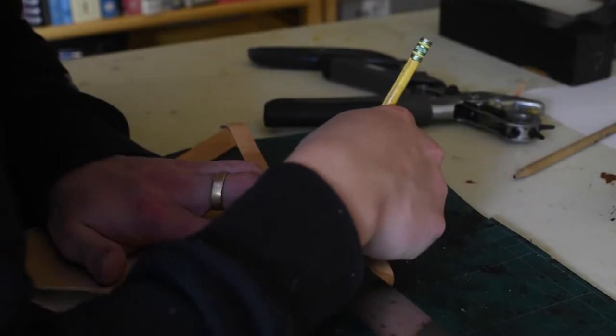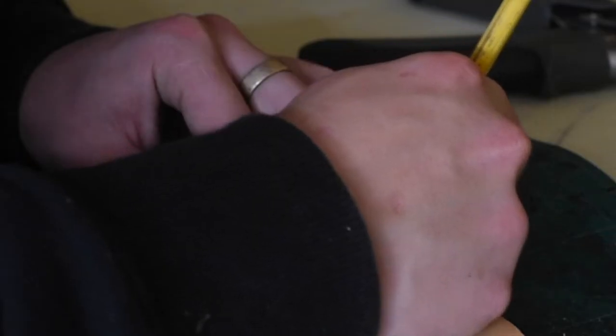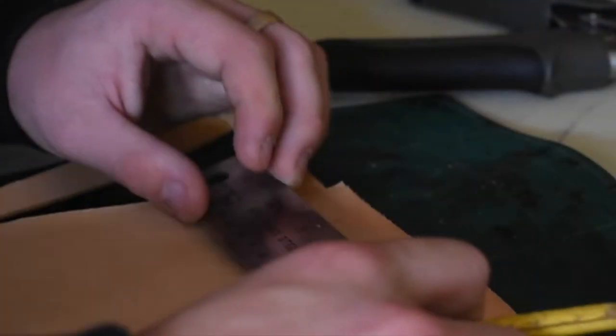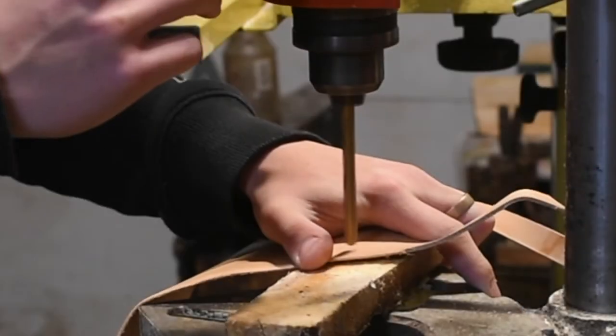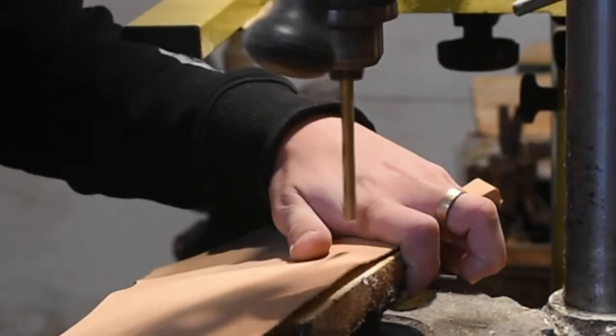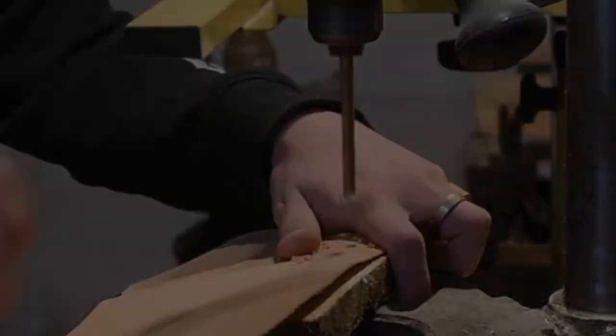Then I mark the slit where the lid or the flap for the pouch is going to come through, because the pouch is going to be kind of set on top, and the flap is going to come out from behind. And then I'm using the drill press to drill out the ends of this slit, and then I'll connect the dots with the knife.